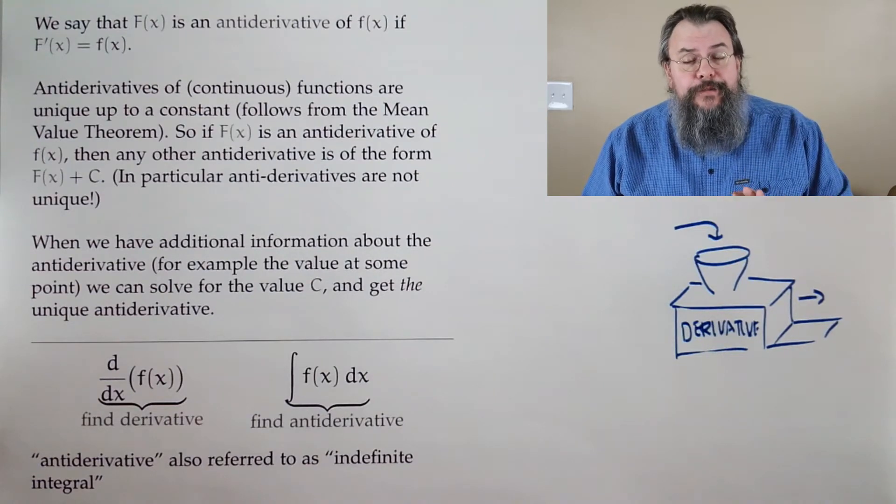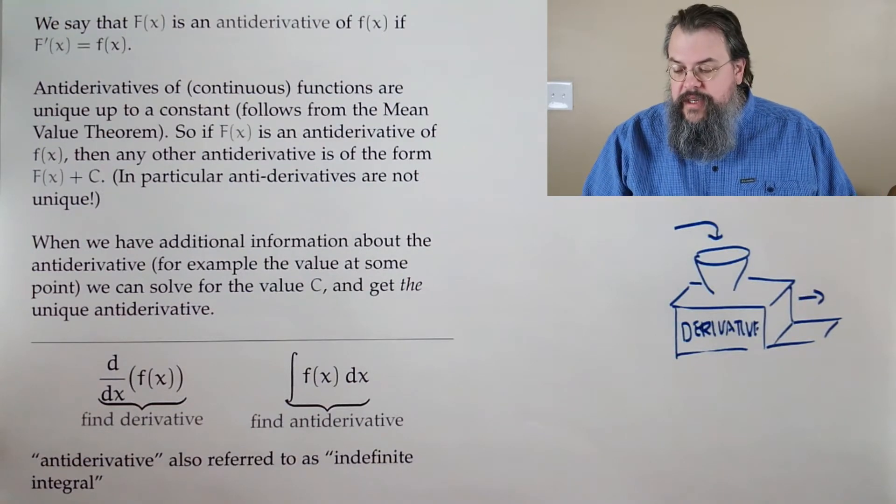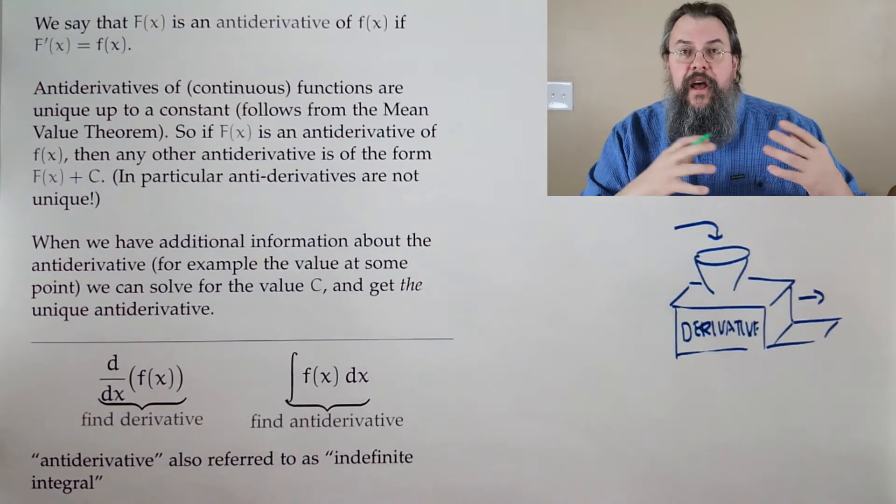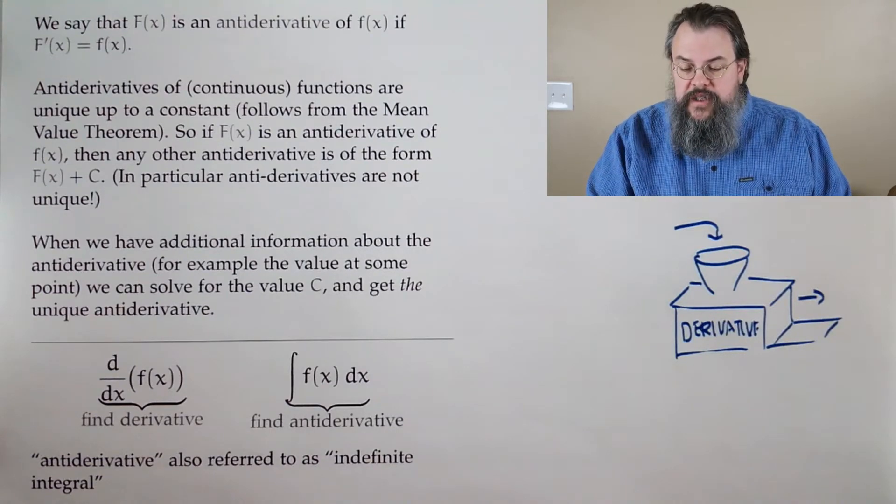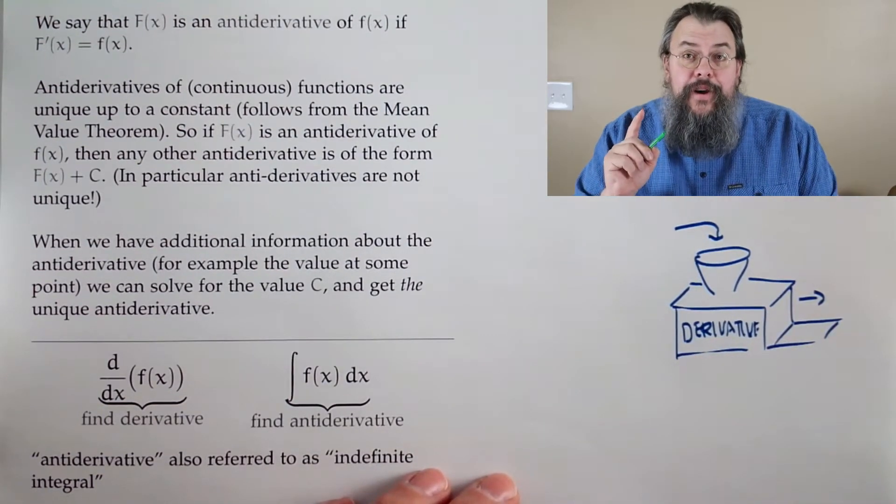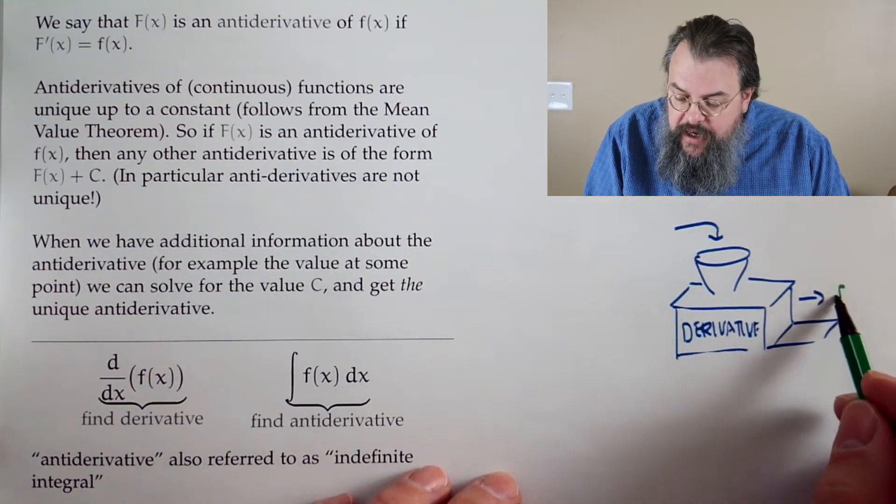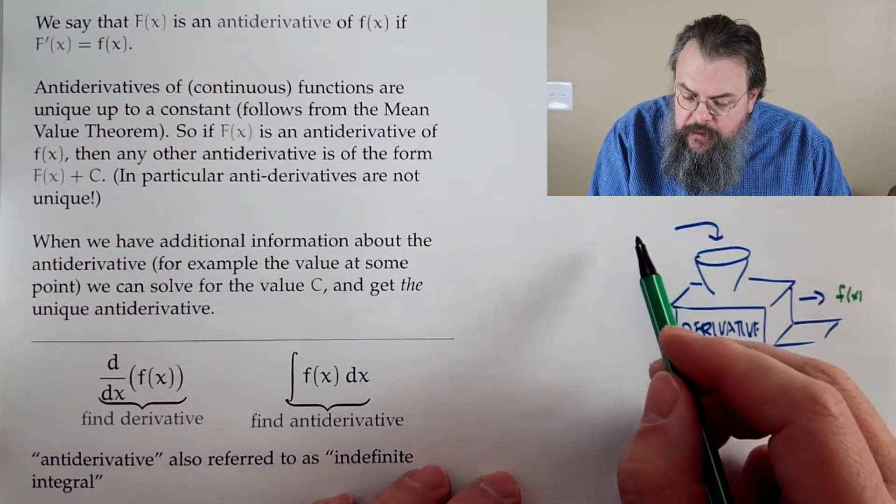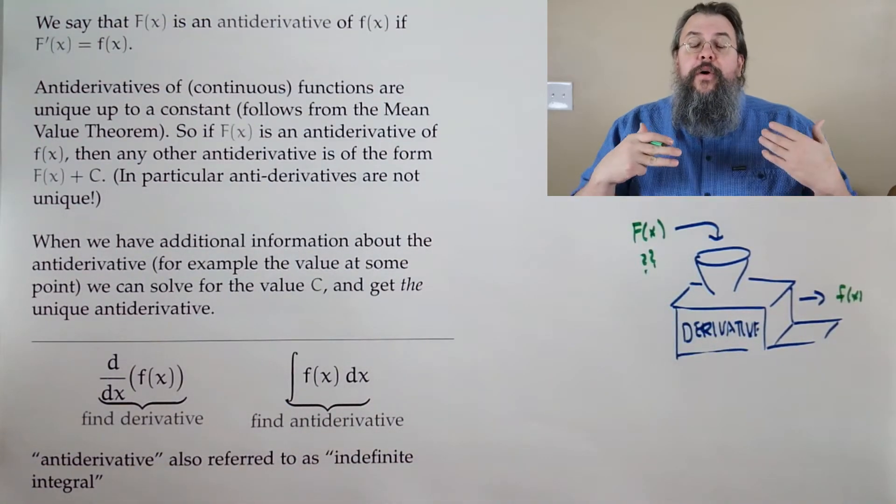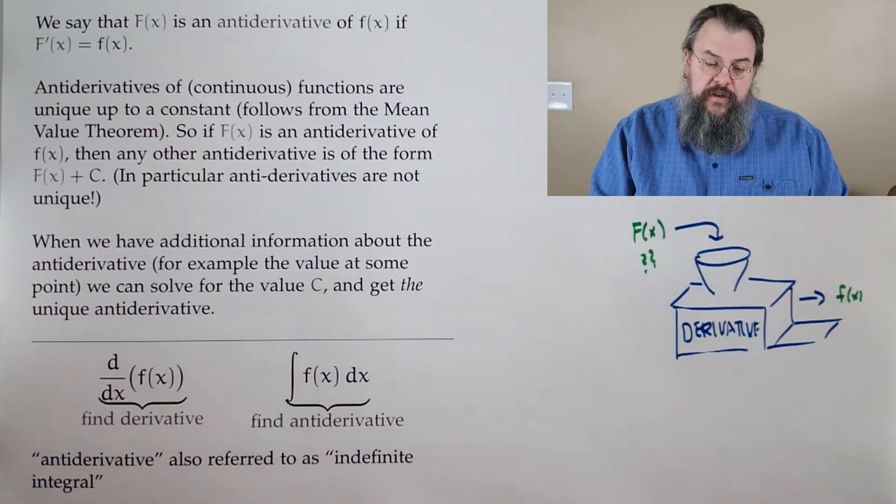We have our set of rules that help us. We're really good at going this way. Our goal with antiderivatives says, hey, out here you got some function that came out. What is the function that went in? That's what we're talking about. What do you plug into the derivative to produce a particular function?